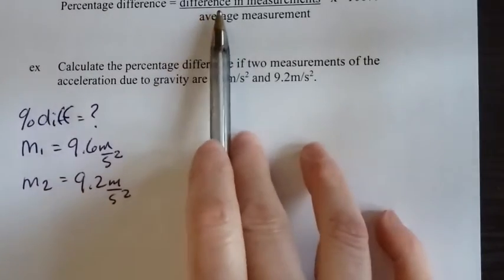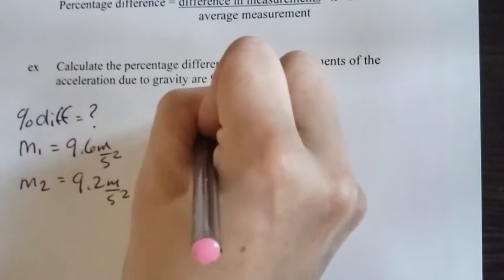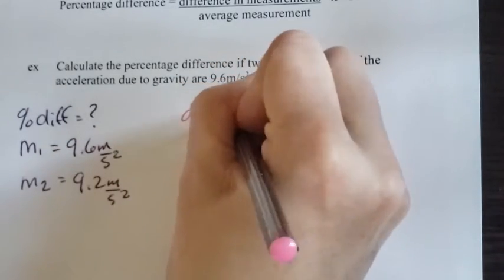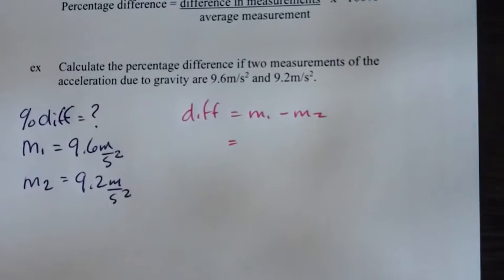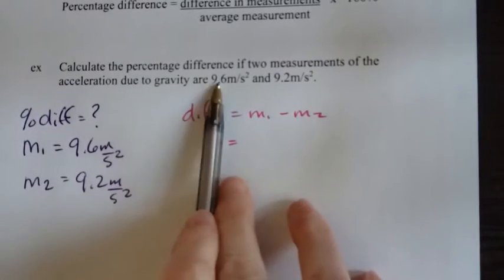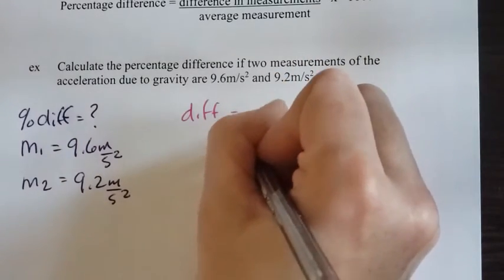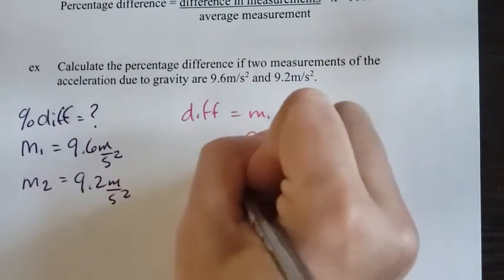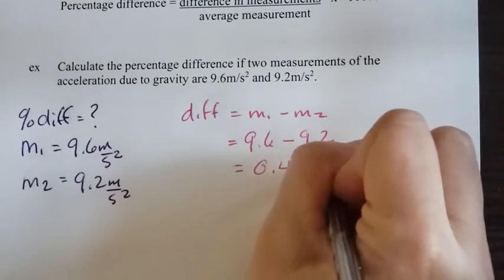To calculate this, I need to calculate a few things first. The first thing is to get the difference in the measurements. The difference equals M1 subtract M2. I don't really care too much about the negative sign. It makes no difference what order I use the values in. So it's going to be 9.6 subtract 9.2, and I get 0.4 meters per second squared.